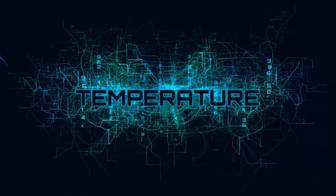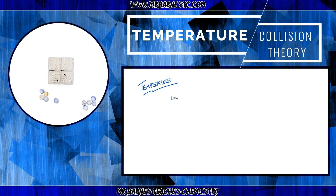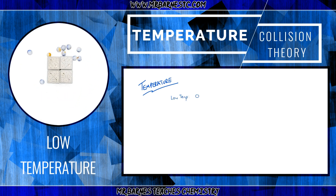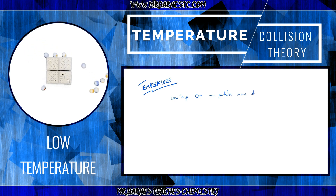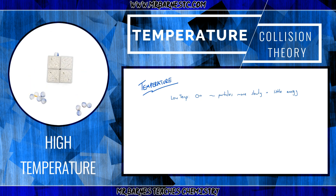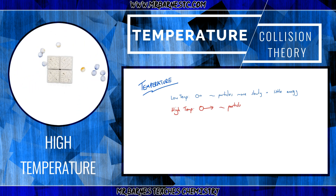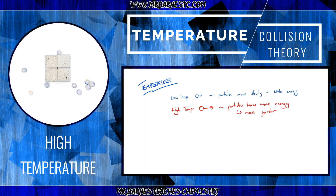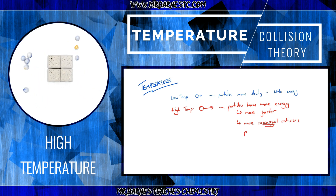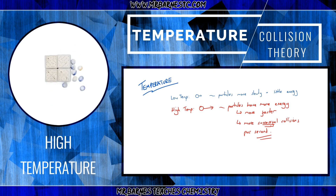If we have a look at temperature to begin with — as you can see on the left here, the particles are moving really slowly because we're at a low temperature. If they're moving slowly it means they've got very little energy, therefore the reaction is going to take a long time. So if I increase the temperature, you can see the particles are moving faster because they have more energy. If they have more energy and are moving faster, it means there are going to be more successful collisions per second, and the more successful collisions per second, the faster the rate of reaction.